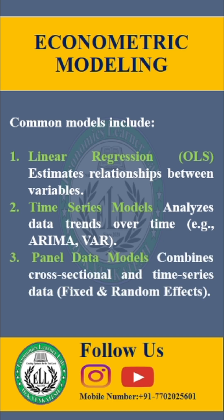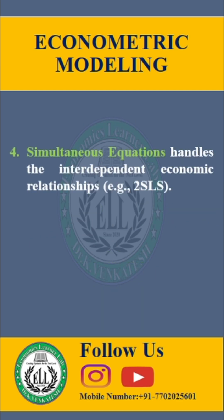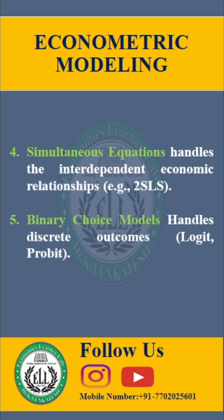The third one is panel data models, which combines cross-sectional and time series data using fixed and random effects. The fourth one is simultaneous equation models, which captures interdependent relationships — for example, 2SLS. The fifth one is the binary choice model, which deals with discrete outcomes — for example, logit or probit models.